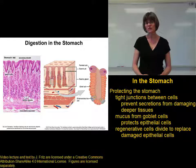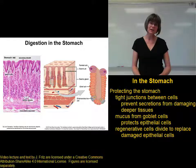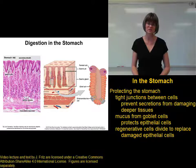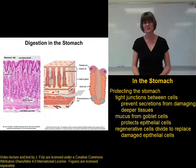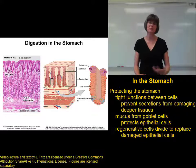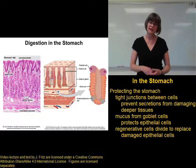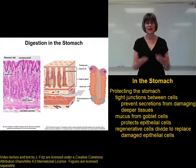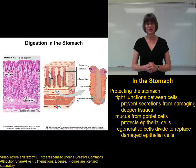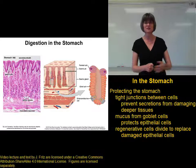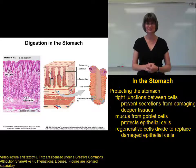Although conditions in other areas of the intestine are not quite as harsh as in the stomach, the same sorts of protective measures are still found there. For example, in the small intestine there are tight junctions, a mucus layer, and many cells regenerating all the time, as well as in the large intestine.